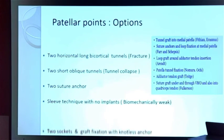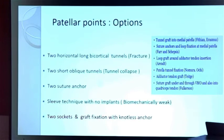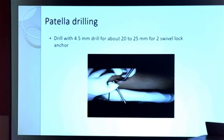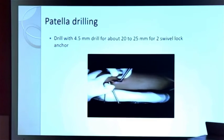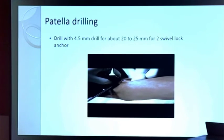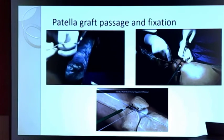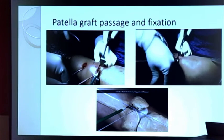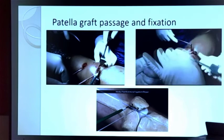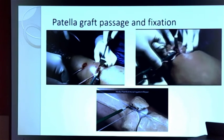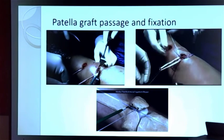There are multiple options for the patella side, but I prefer the two-socket technique using a nautilus anchor for graft fixation. I drill two 4.5 mm holes on the superior pole of the patella, 3 mm below, with a gap of 10 mm between them. I then use two SwiveLock anchors — passing the first anchor with the graft into the first socket, then the second anchor into the second hole. Once the second anchor is placed, the graft is fixed onto the patella side and stability can be confirmed.